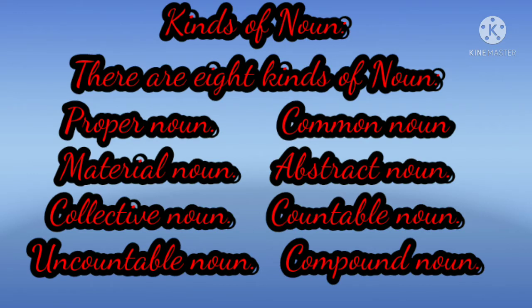There are eight kinds of noun: Proper Noun, Common Noun, Material Noun, Abstract Noun, Collective Noun, Countable Noun, Uncountable Noun and Compound Noun.